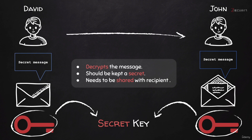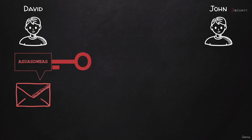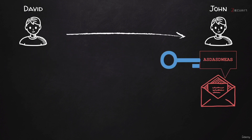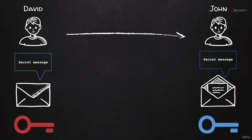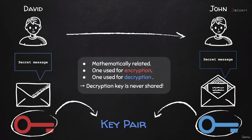This is where asymmetric or public key encryption comes in. In asymmetric encryption, one key is used to encrypt the message, and then another key is used to decrypt the message. As you can see, two different keys are used — hence the name asymmetric encryption. These two keys are referred to as a key pair; they are mathematically related. One is used for encrypting the message, and the other is used for decryption. Therefore, the decryption key is never shared, and that's why it's more secure.